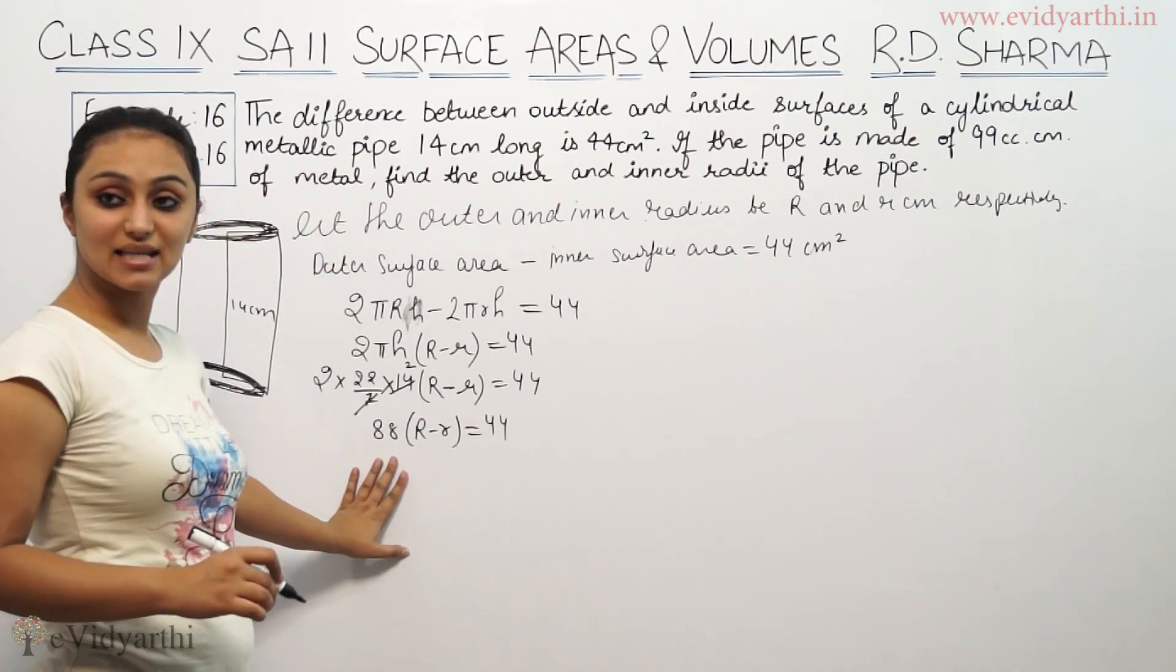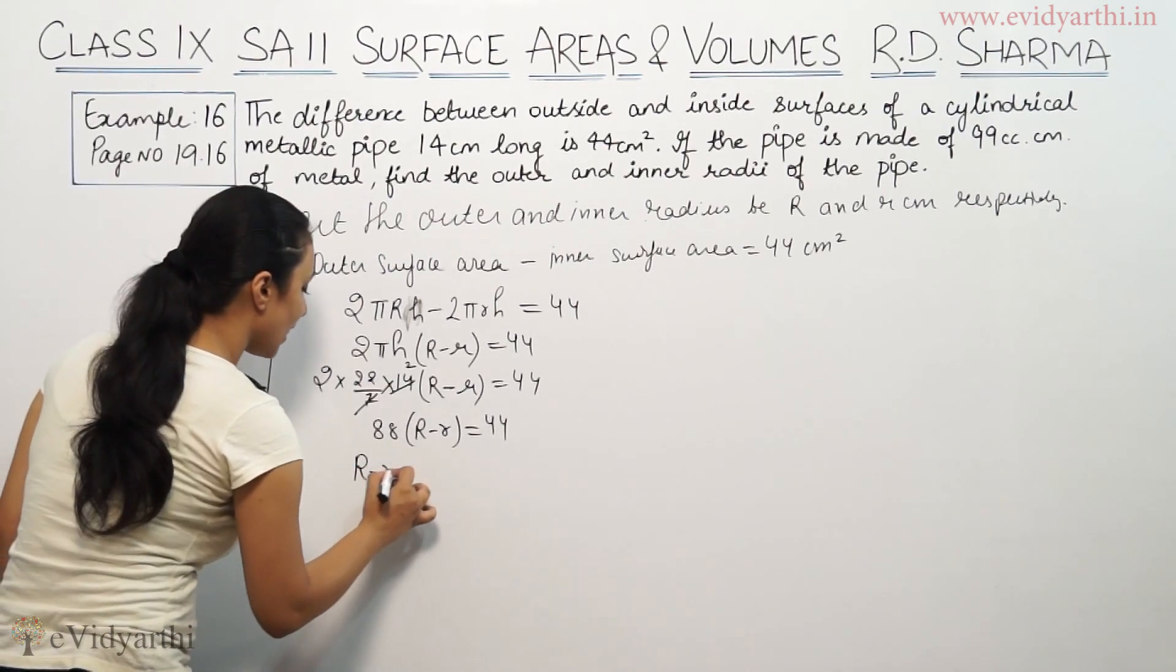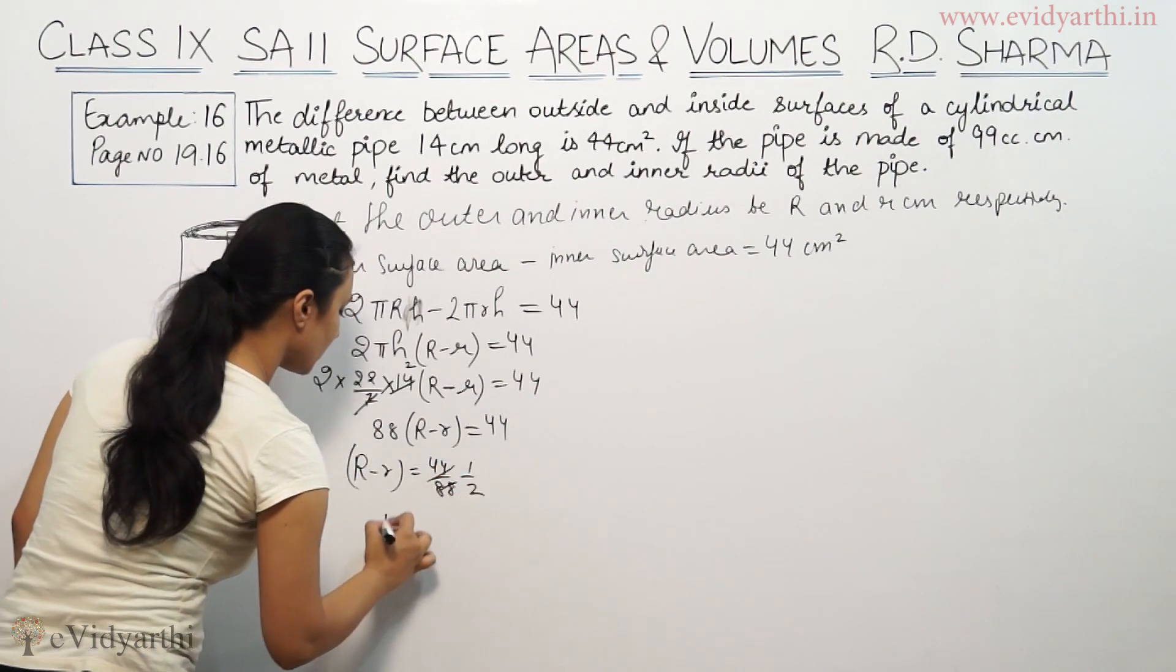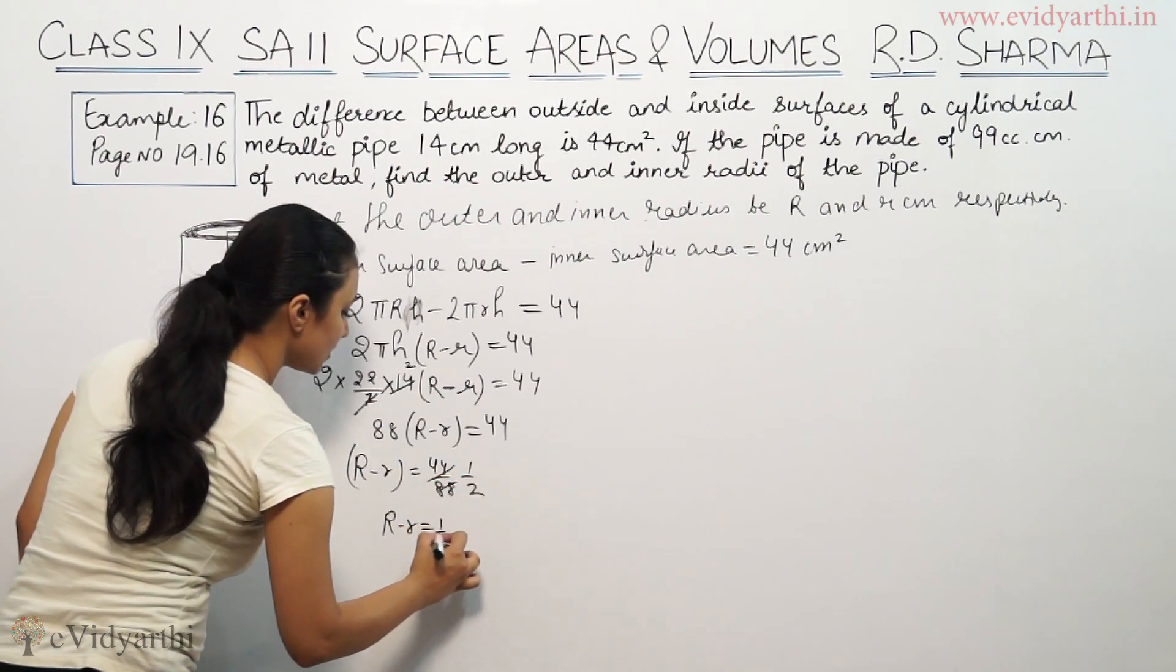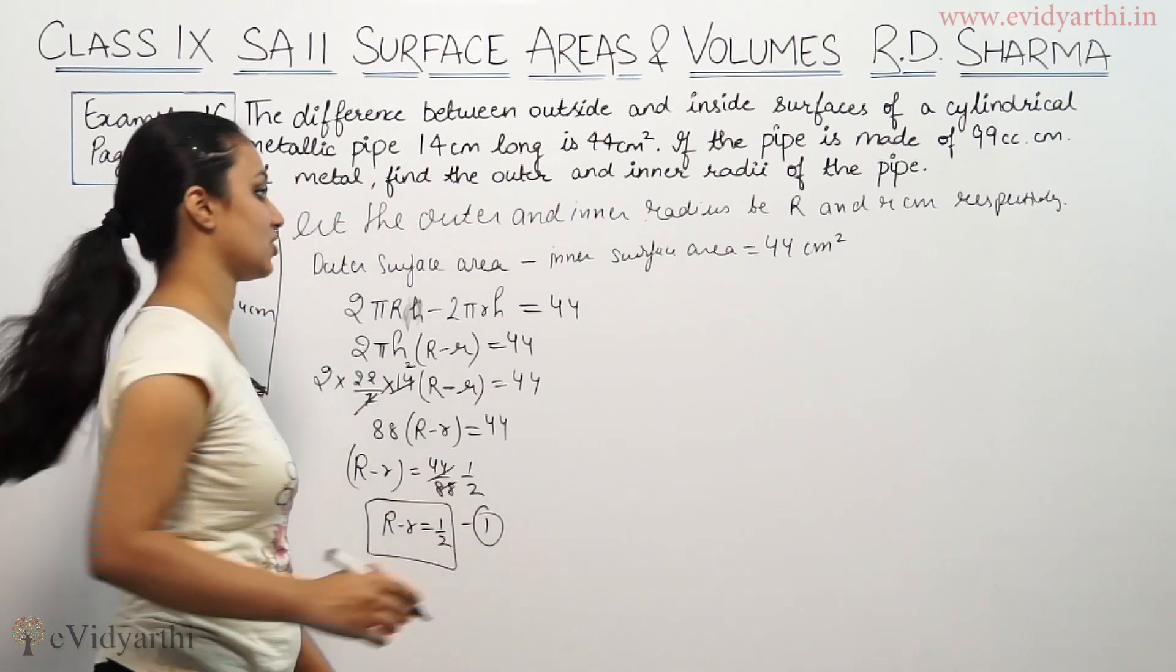88(R - r) = 44. 88 is in multiplication, so R - r equals 44/88, which means 1/2. So R - r = 1/2. This is the first equation.